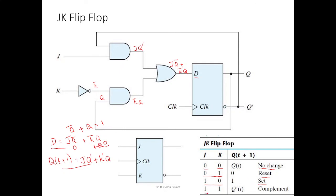When J=1 and K=1: J=1 gives Q̄ for the first term, and K=1 makes K̄=0, so the second term is 0. We feed Q̄ (the complement of the current state) as input at time T, and therefore at time T+1 we observe the complement of the state. This is the toggle or complement state. This completes the characteristic table, characteristic equation, and flip-flop input equation for the JK flip-flop.